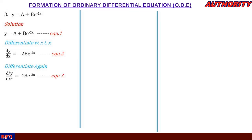Differentiating equation 2 a second time: d²y/dx² = (−2)·(−2b)·e^(-2x) = 4b·e^(-2x). Since −2 × −2 = +4, we have d²y/dx² = 4b·e^(-2x). Call this equation 3.